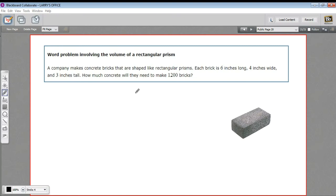Here we have a word problem involving the volume of a rectangular prism. Let's go ahead and read this and see if we can figure out how to approach it. It says a company makes concrete bricks that are shaped like rectangular prisms. Each brick is six inches long, four inches wide, and three inches tall.